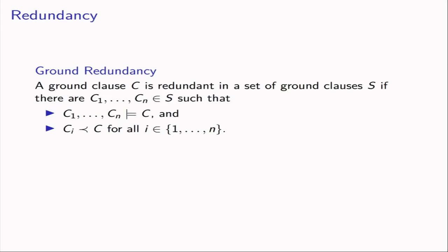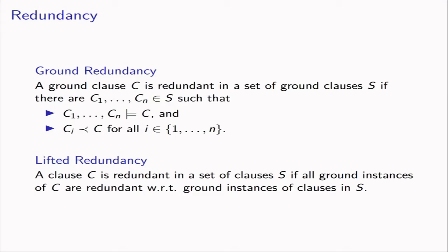Let's look more closely at redundancy. A ground clause is redundant in a set of ground clauses if it is a logical consequence of smaller clauses — there exist c1 through cn in the space such that they imply c, and all those ci's are smaller than c in the clause ordering. For non-ground clauses, a non-ground clause is an abbreviation for all of its ground instances. So a non-ground clause is redundant in a set of clauses if all of its ground instances are redundant with respect to some ground instances of clauses in the set.